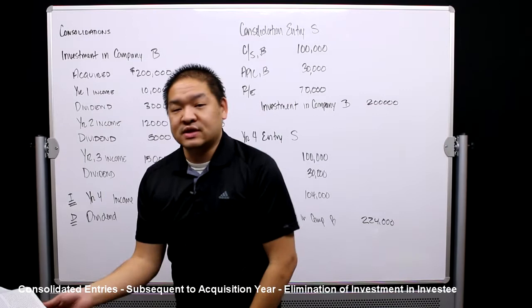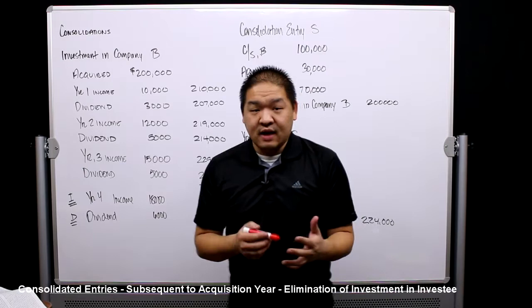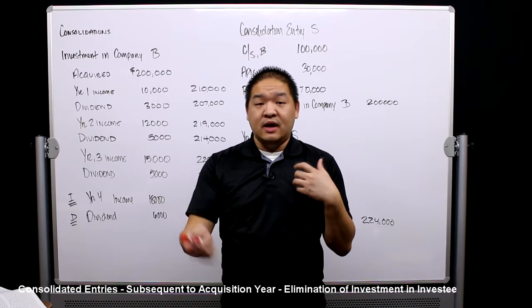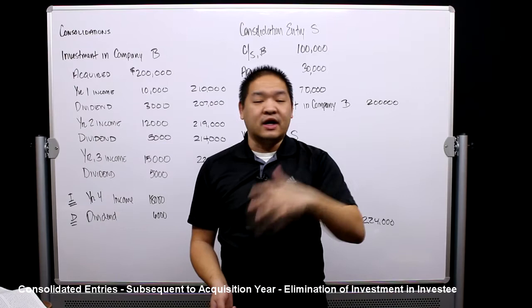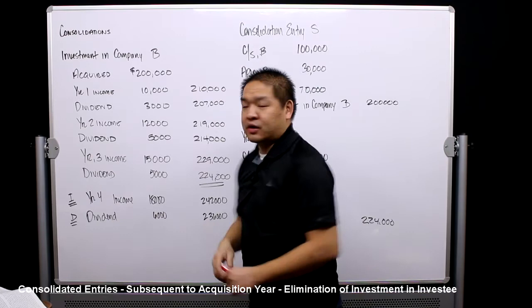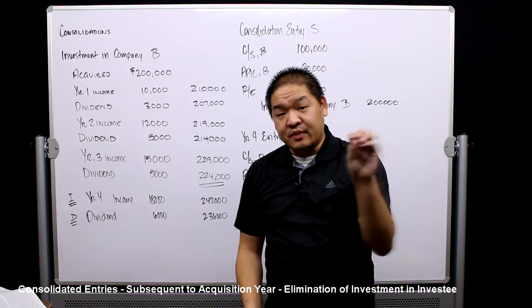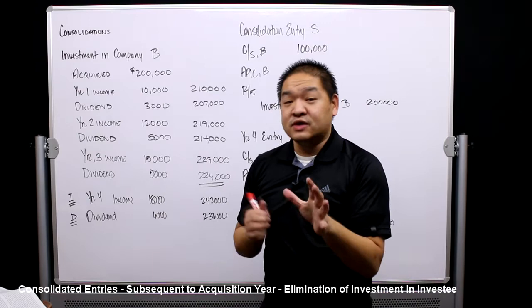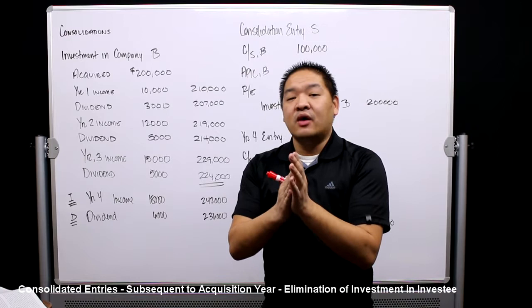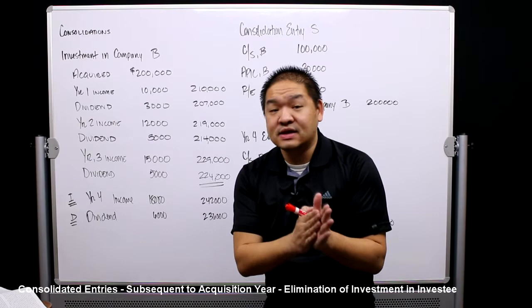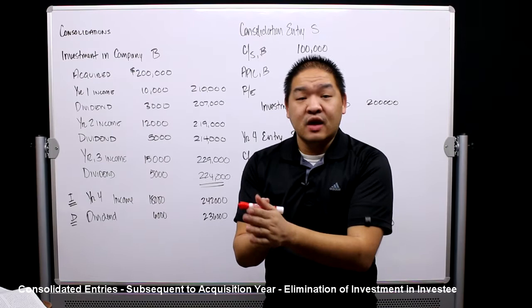Let's start with what happens to the investment in Company B account. The investment in Company B is on the parent's books. When I first acquire Company B, I debit investment in Company B and credit cash. Let's say I buy Company B for $200,000 — debit investment in Company B $200,000, credit cash $200,000. We're using the equity method, which increases the investment account when the investee has income.